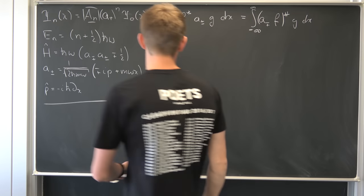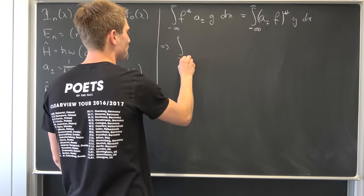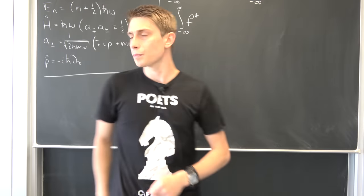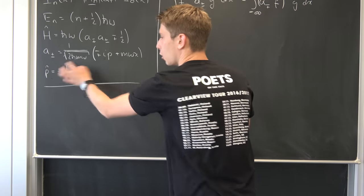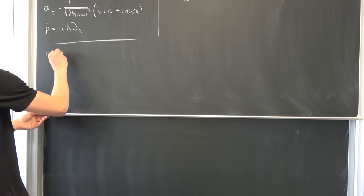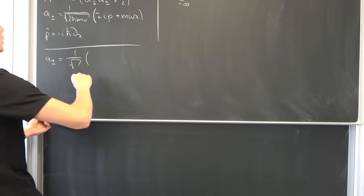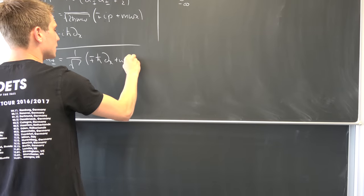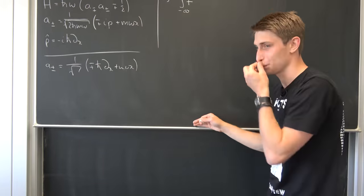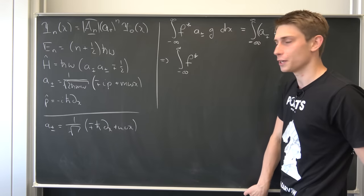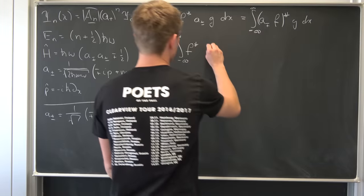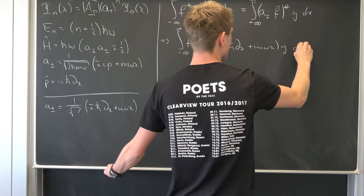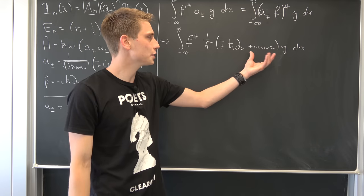Let's go ahead and get started and plug all the definitions in. So we have the improper integral of f conjugate, and then a± is nothing but 1 over this square root term — I'm just writing it like that for simplification — and then ∓ħ ∂ₓ plus mωx. We can plug this into the integral: 1 over the square root, times ∓ħ ∂ₓ plus mωx, times g dx. Then we can use linearity of the integral and break this up a bit into two integrals, also taking the common factor 1 over the square root to the outside.